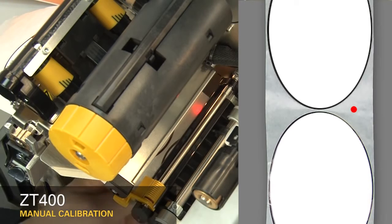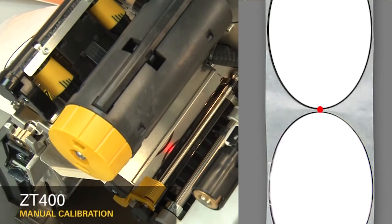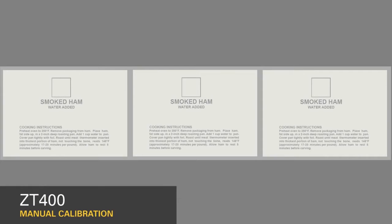If your media is not a simple rectangle, such as a circular shape, locate the sensor over the leading part of the label. If you're using media with print on the underside, try to locate the sensor away from that print so the sensor does not get a false reading.